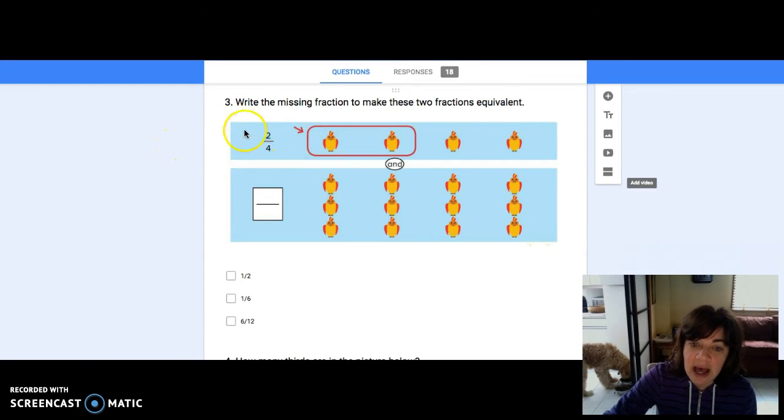Here, if we cover that same amount of space, the correct fraction would be—one, two, three, four, five, six—six out of twelve. Some people wrote one-half, which was also acceptable.